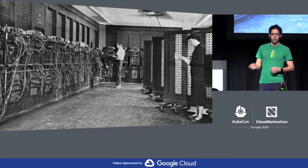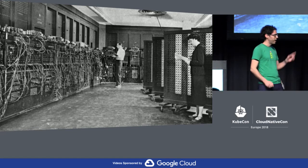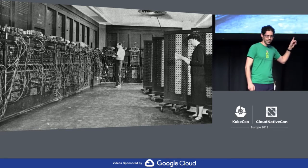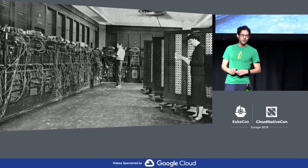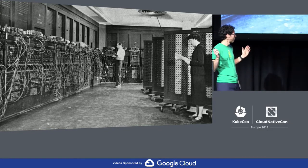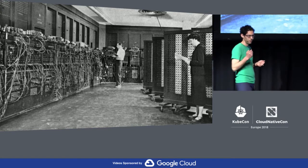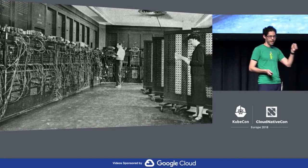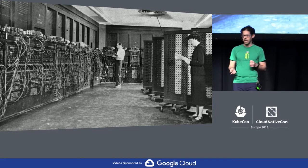So if you were in the 1940s or 50s and you were deploying an app, this is what it would look like. This is a picture of ENIAC, one of the first electronic computers. It took up an entire room or more, and if you needed to develop an app and deploy it, you physically had to rewire to make your changes.